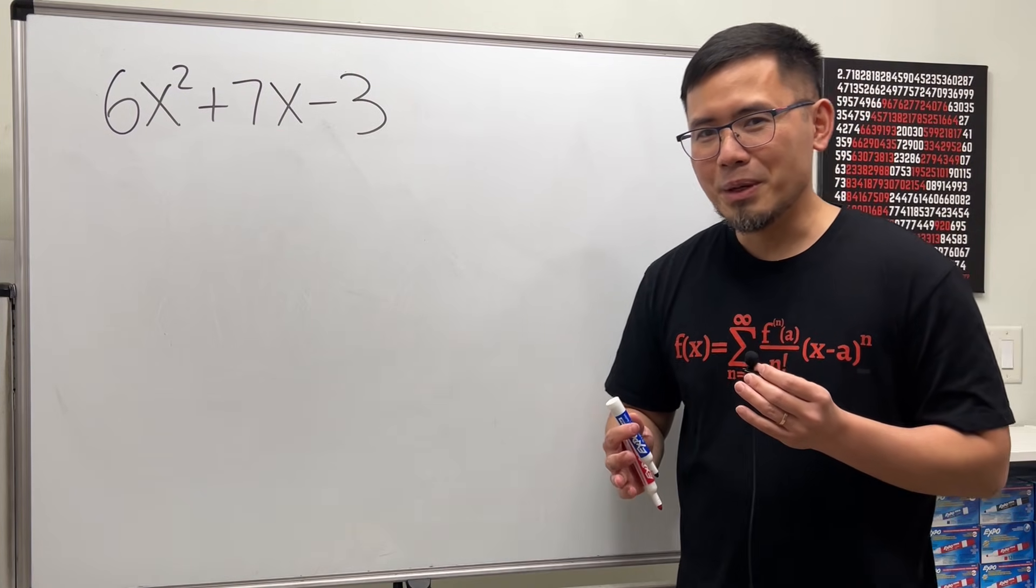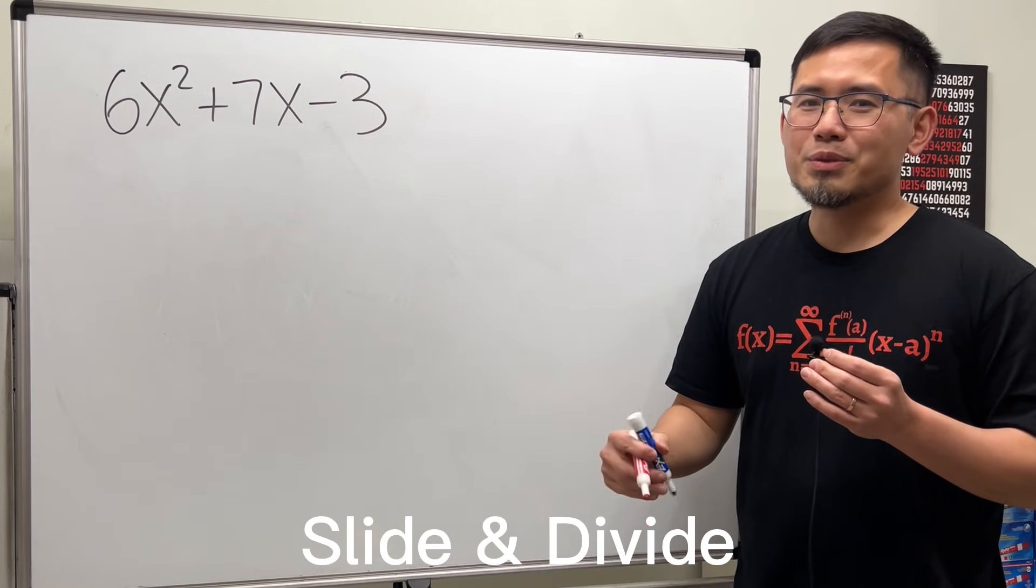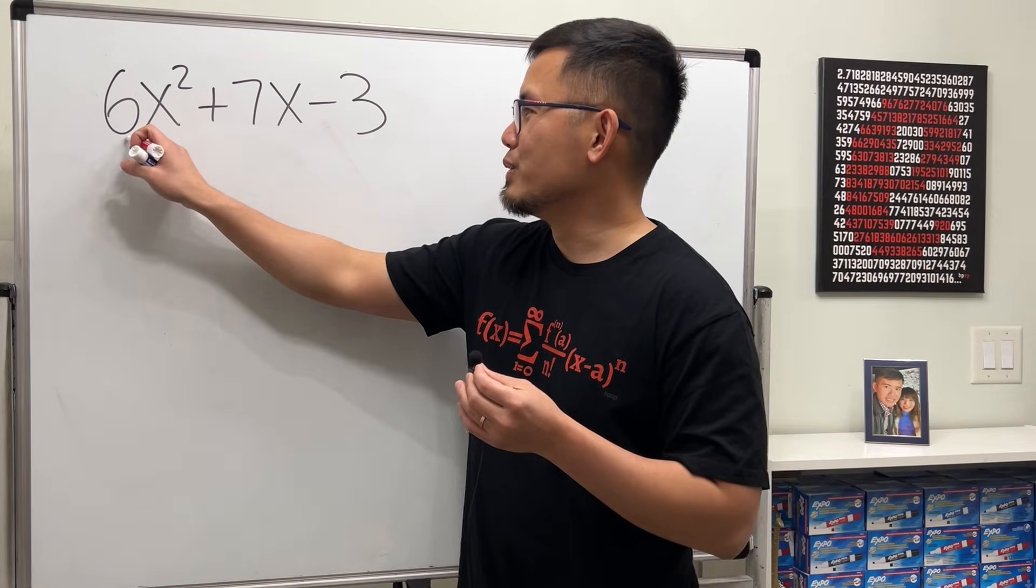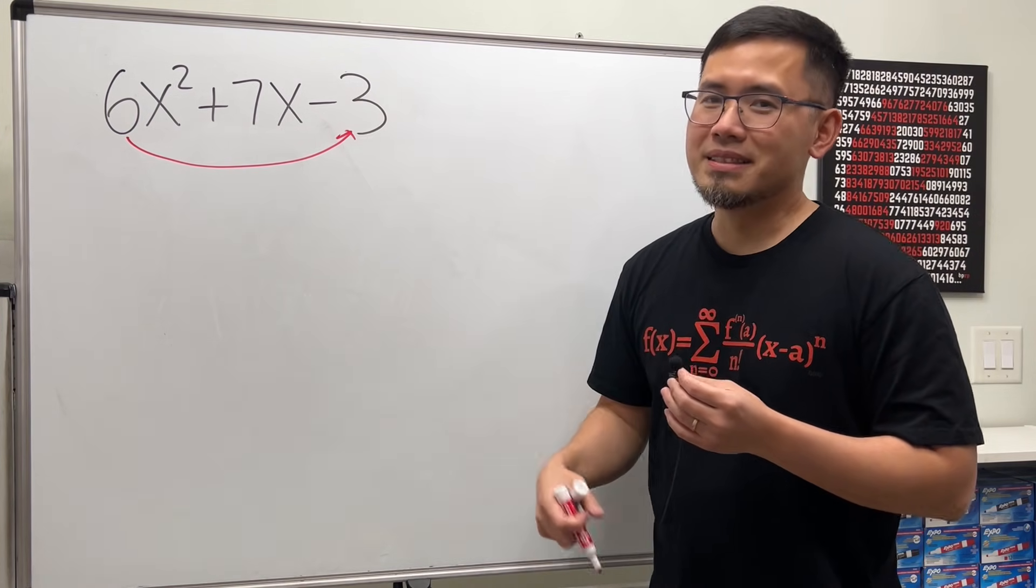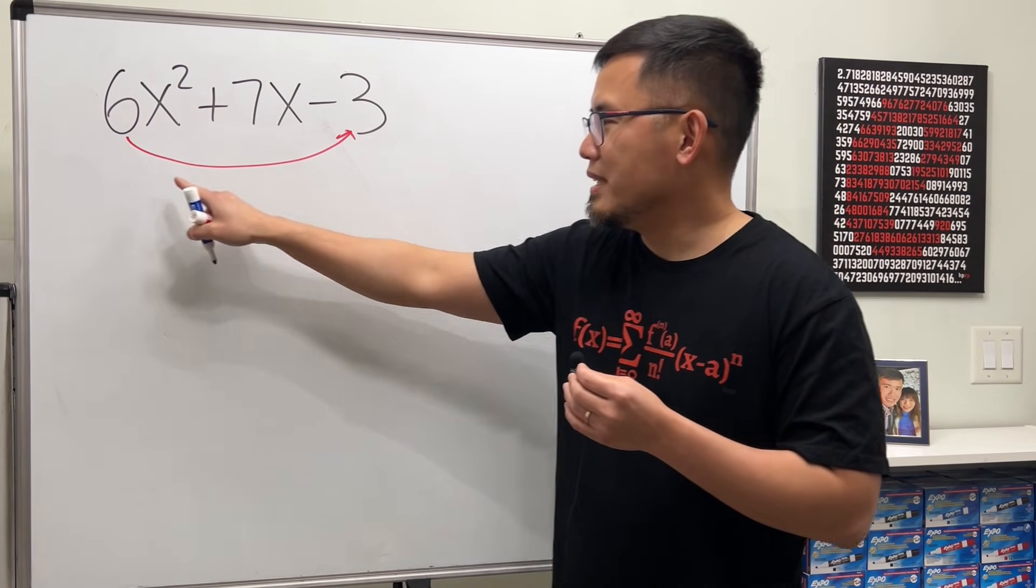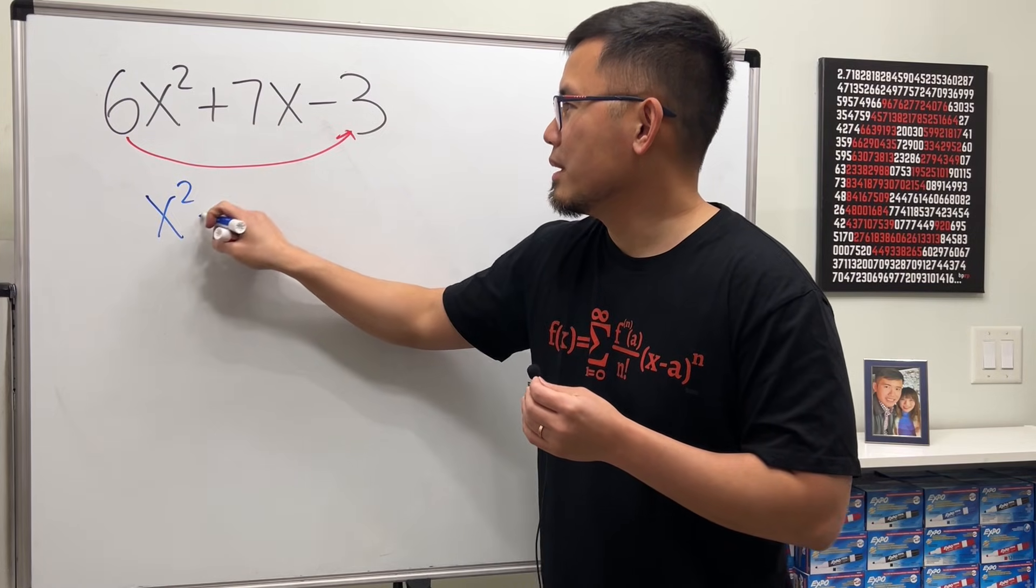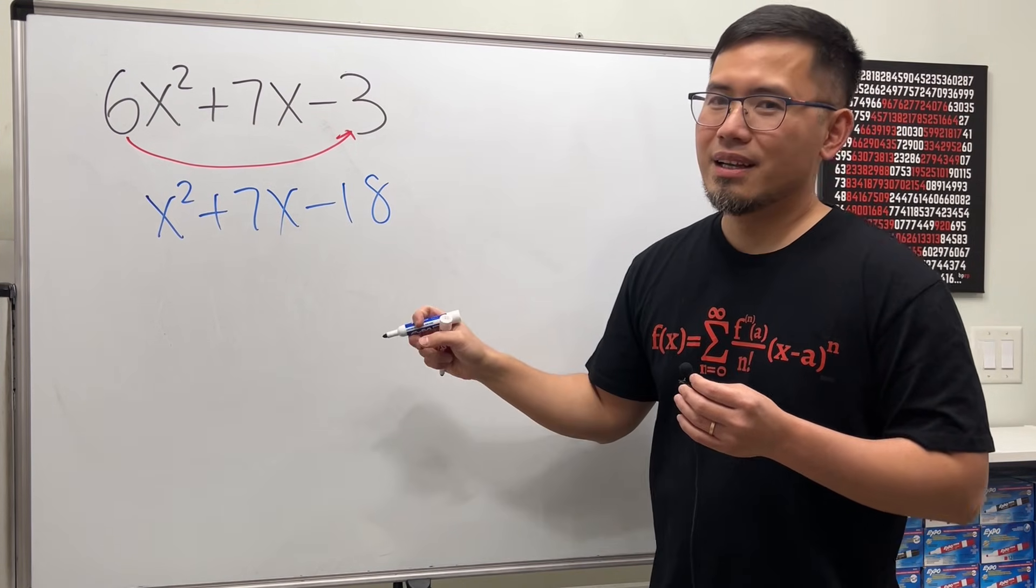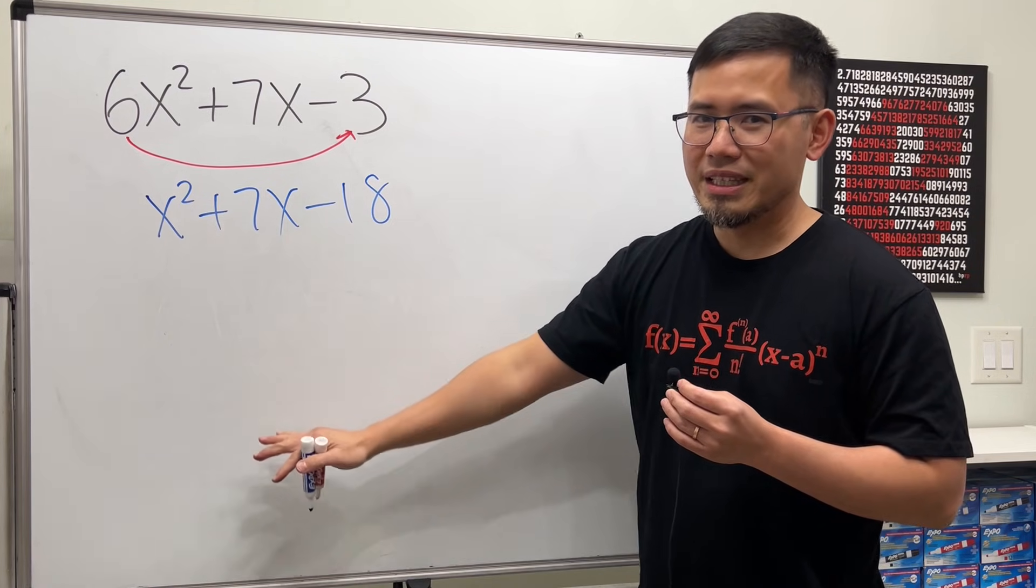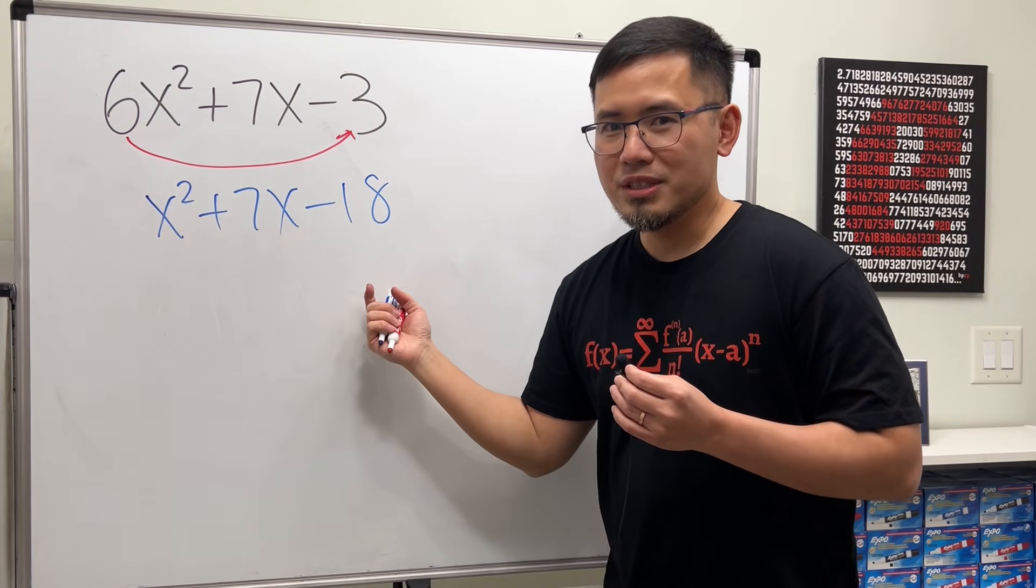Now, for the next way, you might be thinking it doesn't make sense either. But, let me tell you, it also works. This right here is called the slide and divide. I also call this the Amazon prime way. Again, it's a times c once again. You just go ahead and put a 6, multiply with the negative 3, and you will have x squared plus 7x and then minus 18. Again, this is not the same as that. But, just trust me, at the end, we will get the correct factoring. Now, this is so much easier to factor. It's just a coefficient 1 here.